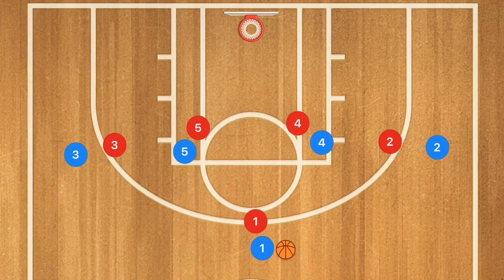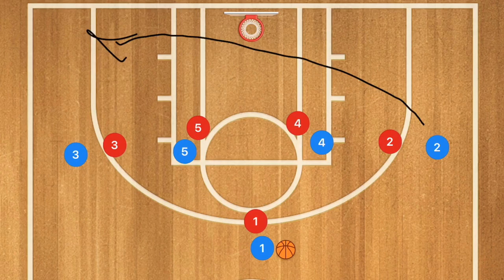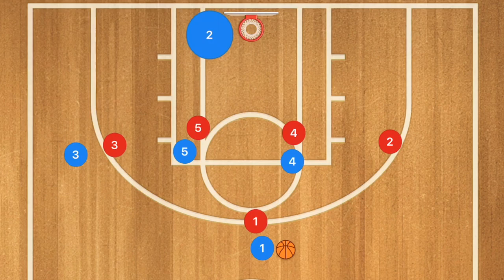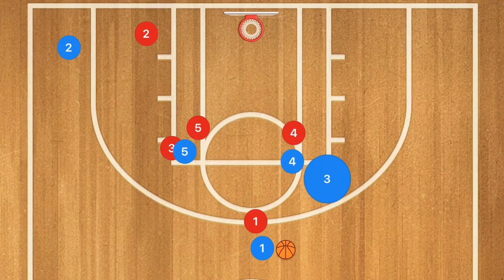Our next play has player 2 cutting across the baseline towards the corner, and then player 3 using player 5 as well as player 4 as a screen — a double screen. Player 3 is going to be using both of those players as a screen and should be open on that side for a mid-range or three-point shot, or he could cut through and go in for a layup.